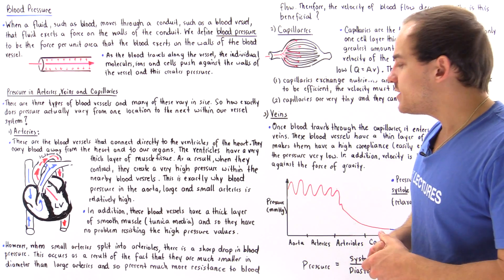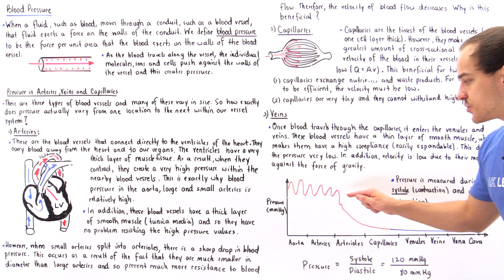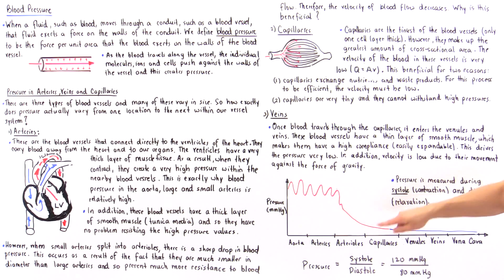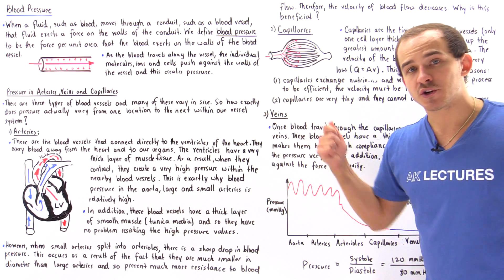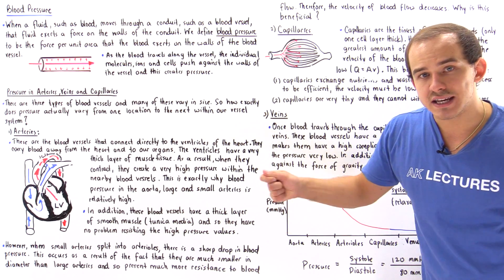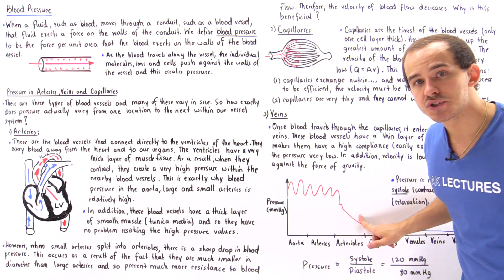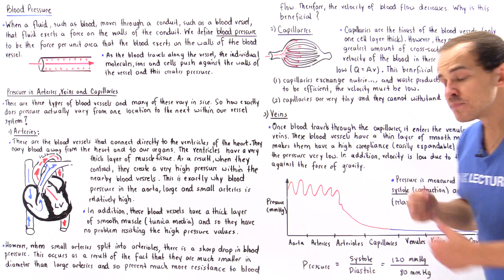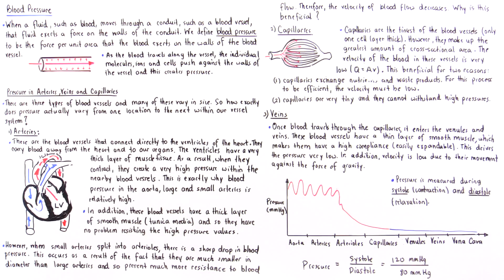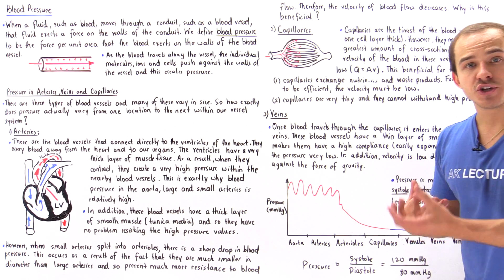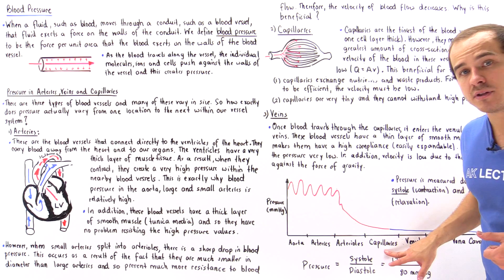Within the aorta and large and smaller arteries we have high pressure, but as we go into the arterioles, resistance to flow increases, velocity of blood flow decreases, and pressure also drops. This ensures that the capillaries don't break as a result of high pressure and that fluid and nutrient exchange can take place effectively within the capillaries.